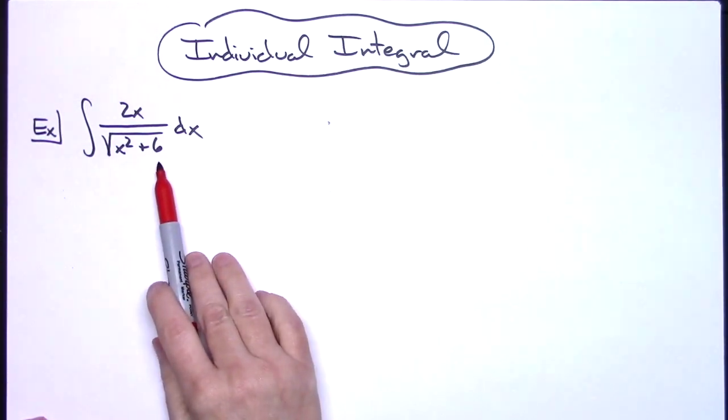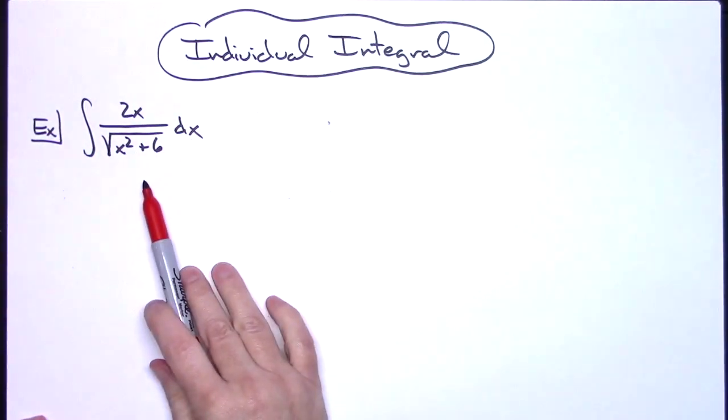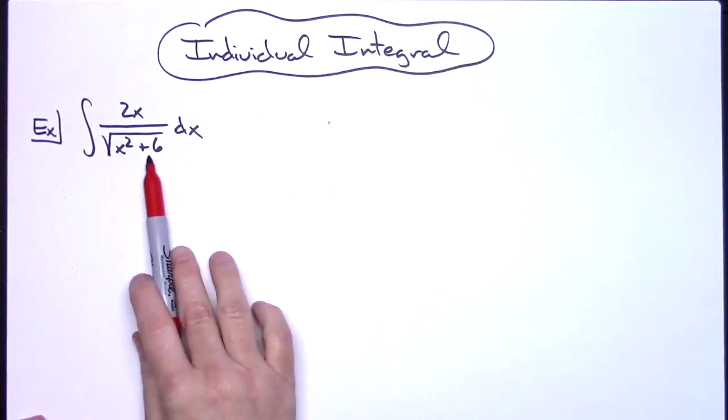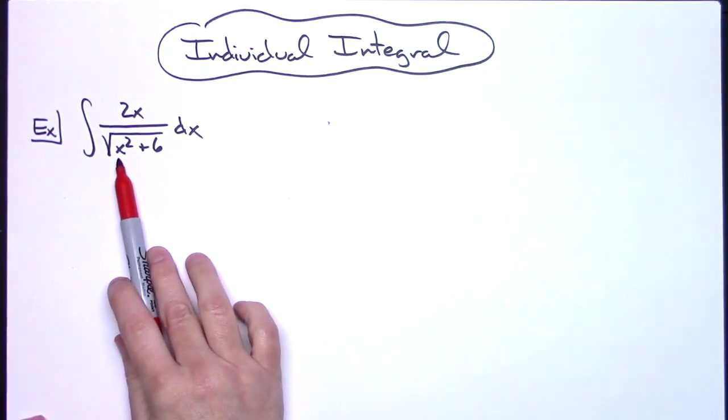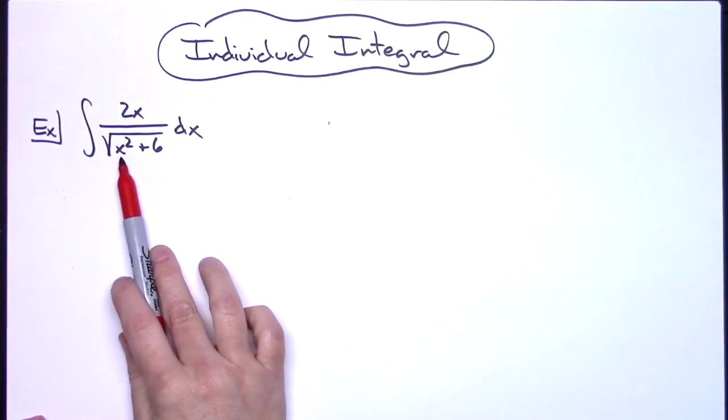The first thing we need to do on a u-substitution is decide what our u is going to be. Generally, we like to look on the inside of functions. Inside that square root function, we see x squared plus 6.